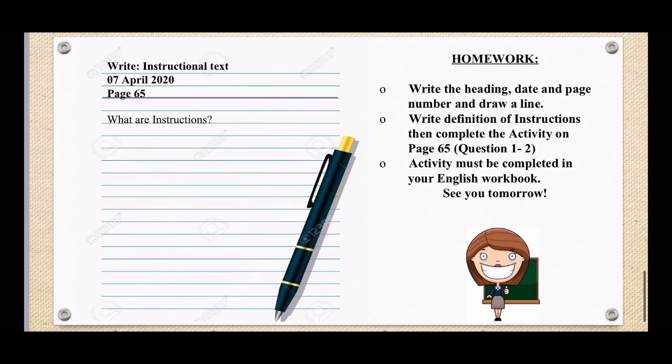Okay. So I've explained how to set up your instructional text in your workbooks. So for homework, I want you to write the heading, write instructional text, the date, which is the 7th of April 2020, the page number, page 65, and always draw a line. Then before you do the activity, I want you to write down the definition of instructions. So in the slide 2, I wrote, what are instructions? So you write that in your book and you write down the definition. And after you've done writing that, then you do the activity on page 65 in your workbook. So that's question 1 to 2.